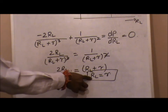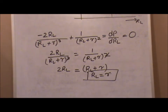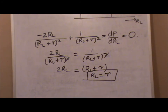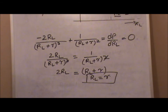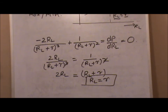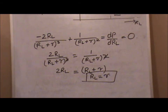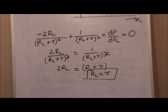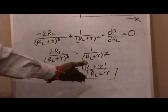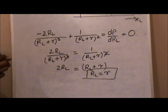Whenever RL equals r, the circuit will give maximum power output across the load resistance. If you provide this level of analysis — statement, explanation, and proof — in a university examination paper, the examiner will see that your level of study is quite good, and it will be helpful to get good marks. Thank you.